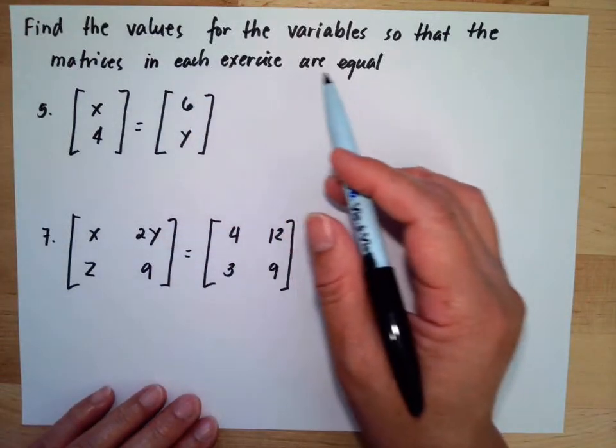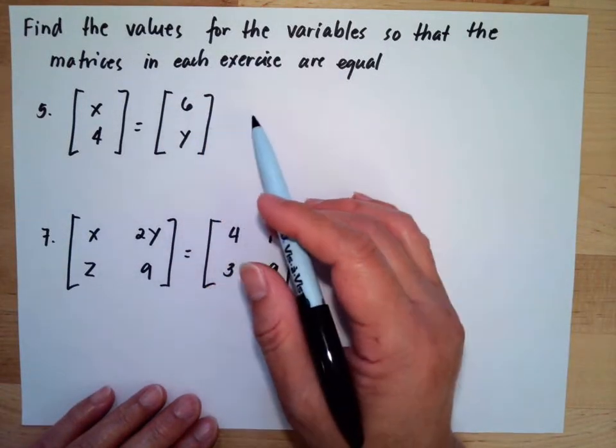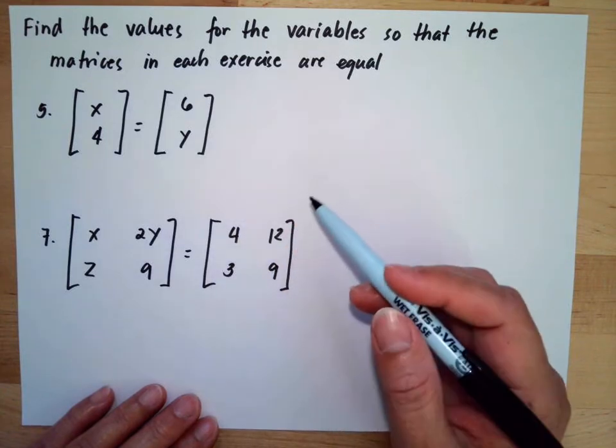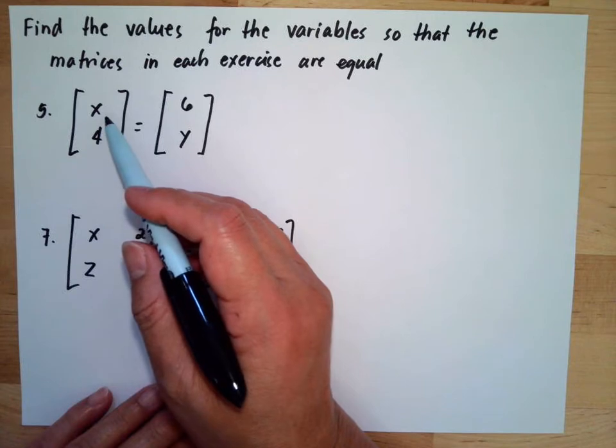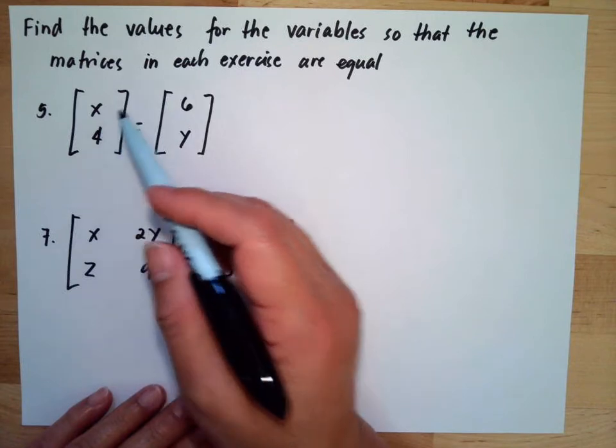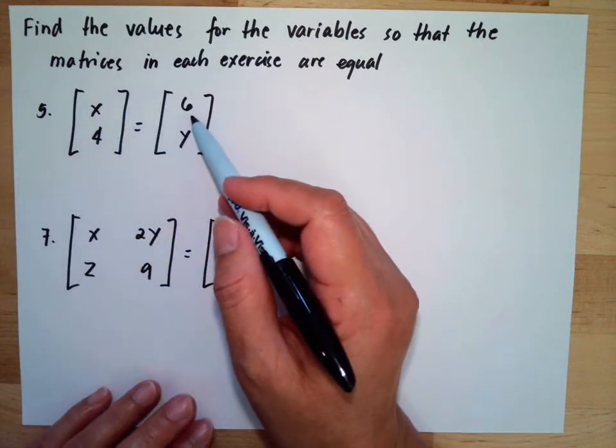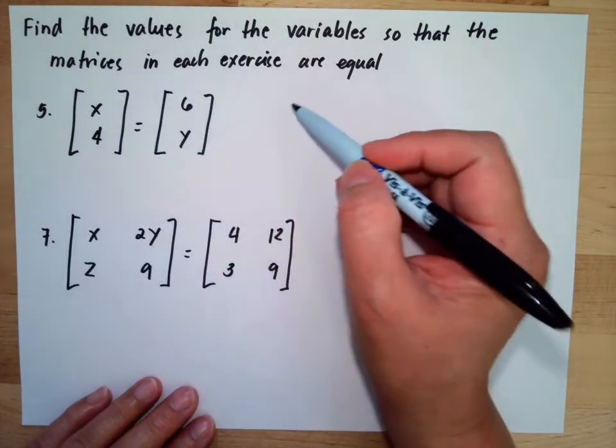Find the values for the variables so that the matrices in each exercise are equal. For number five, we have x as our first row and first column, and this first row and first column is six, so x is equal to six.